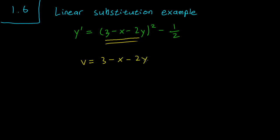So the next step is to take the derivative with respect to x on both sides and this gets us dv/dx equals 0 minus 1 minus 2dy/dx.